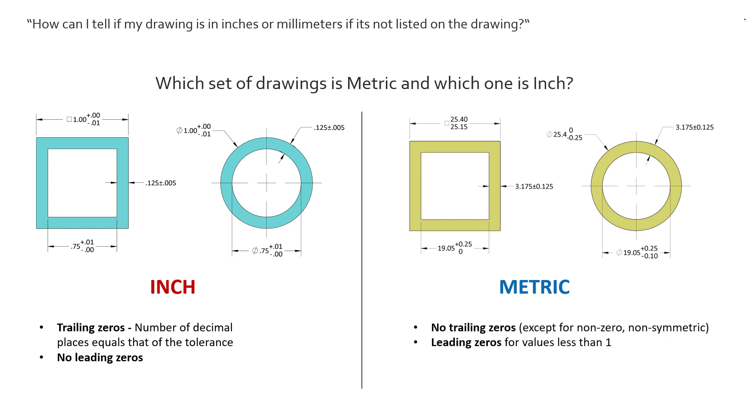For the left inches, the rule is that trailing zeros must be added to the tolerance and the dimensions so that the dimension equals the number of decimal places listed for the tolerance.